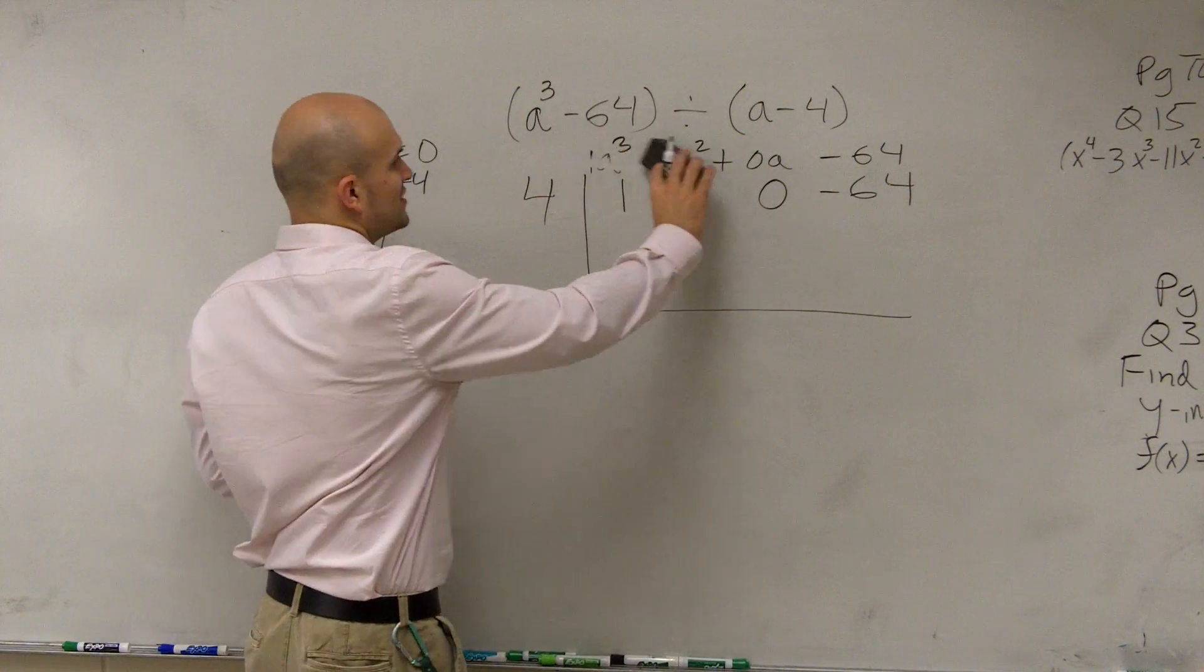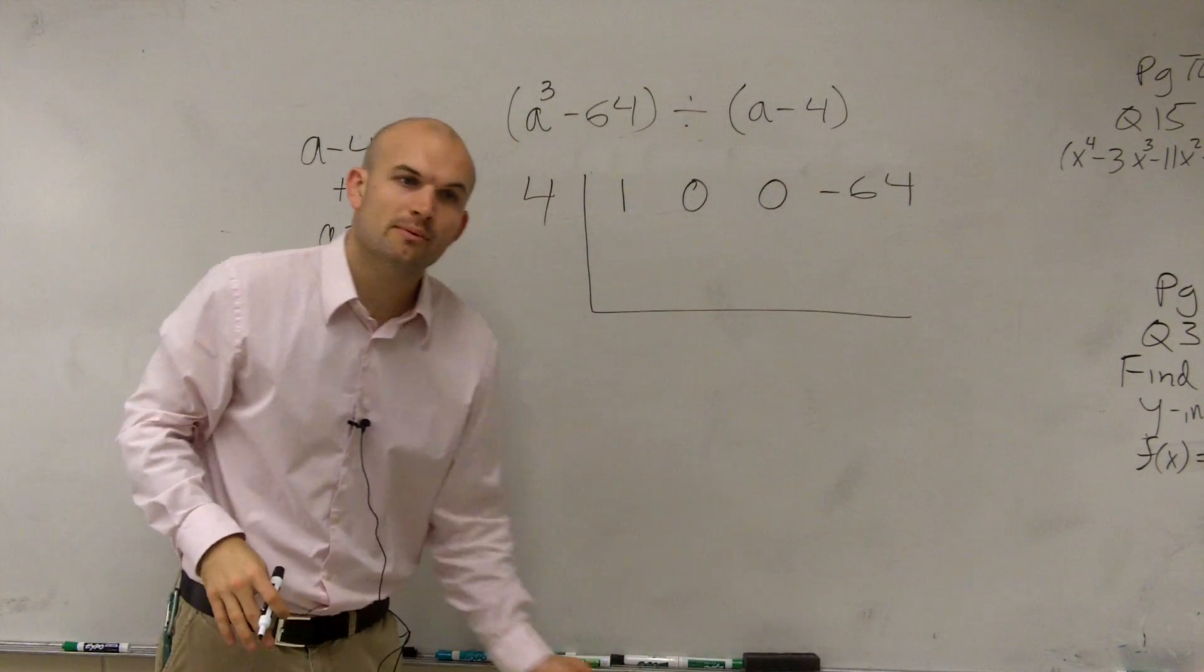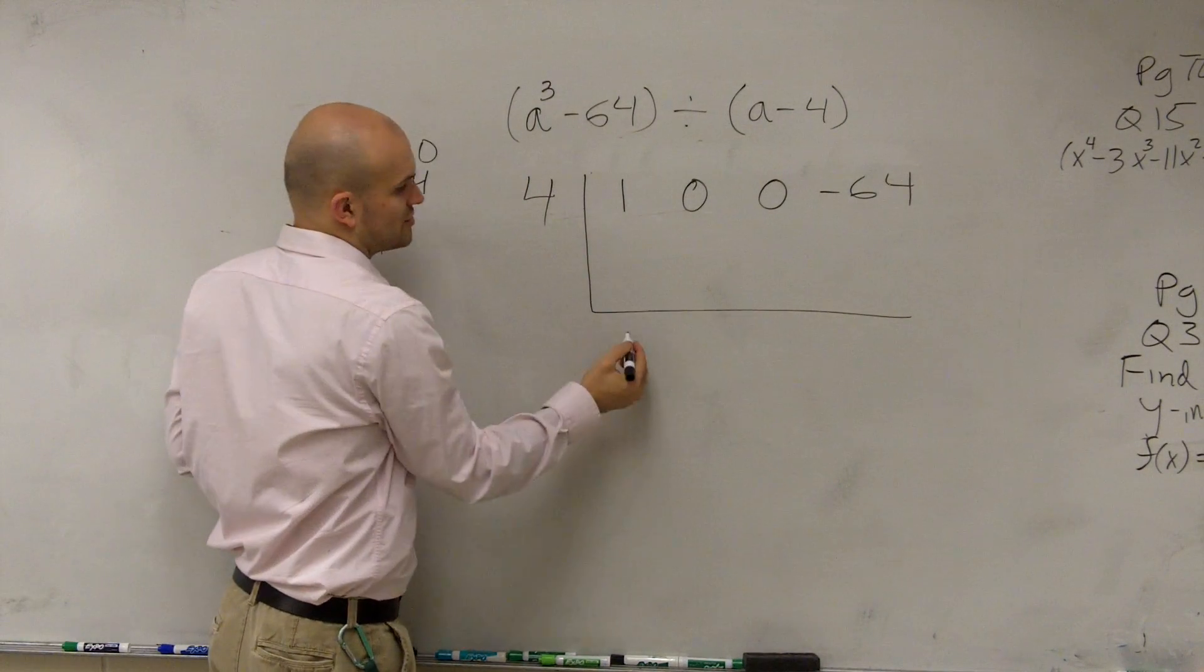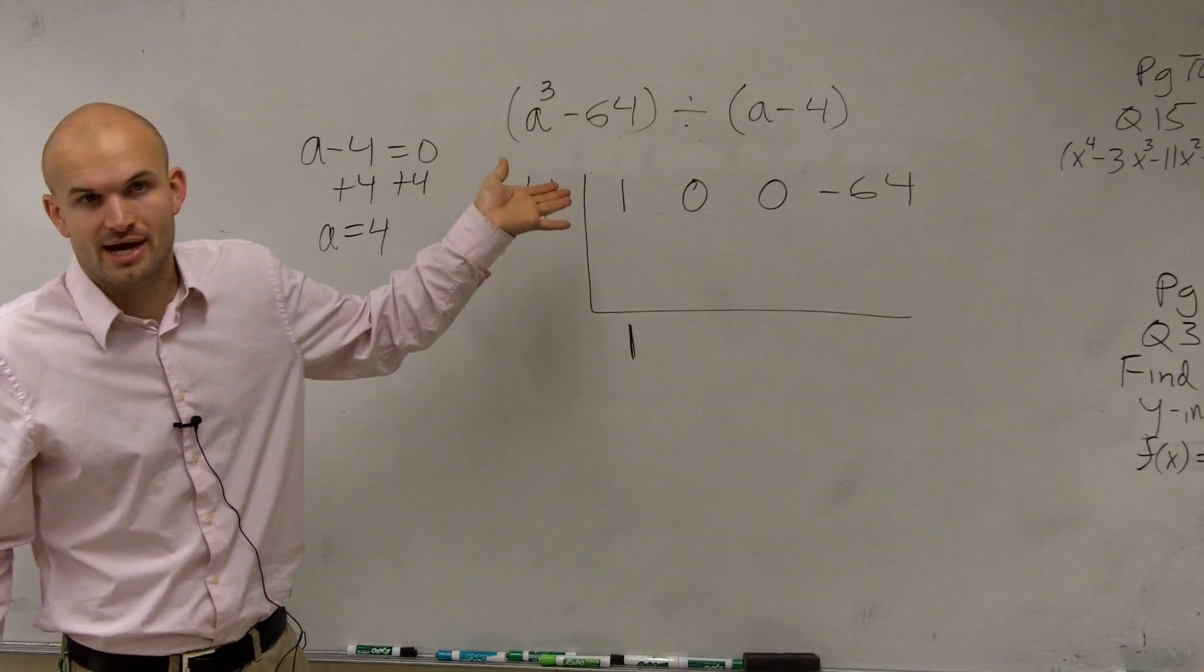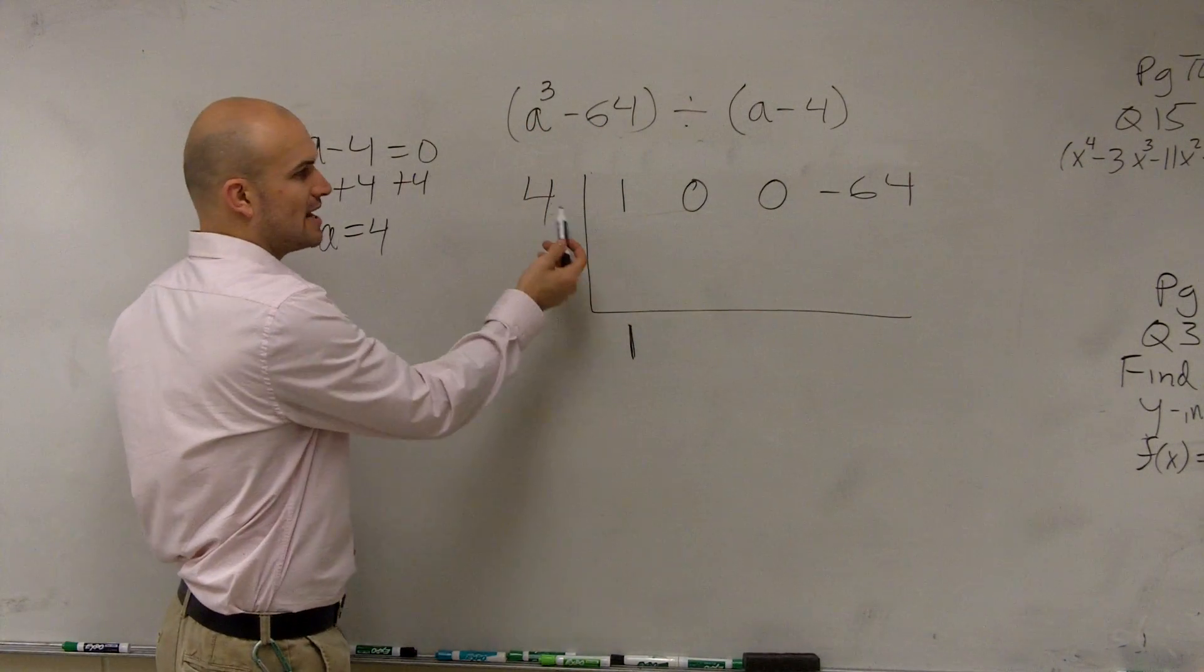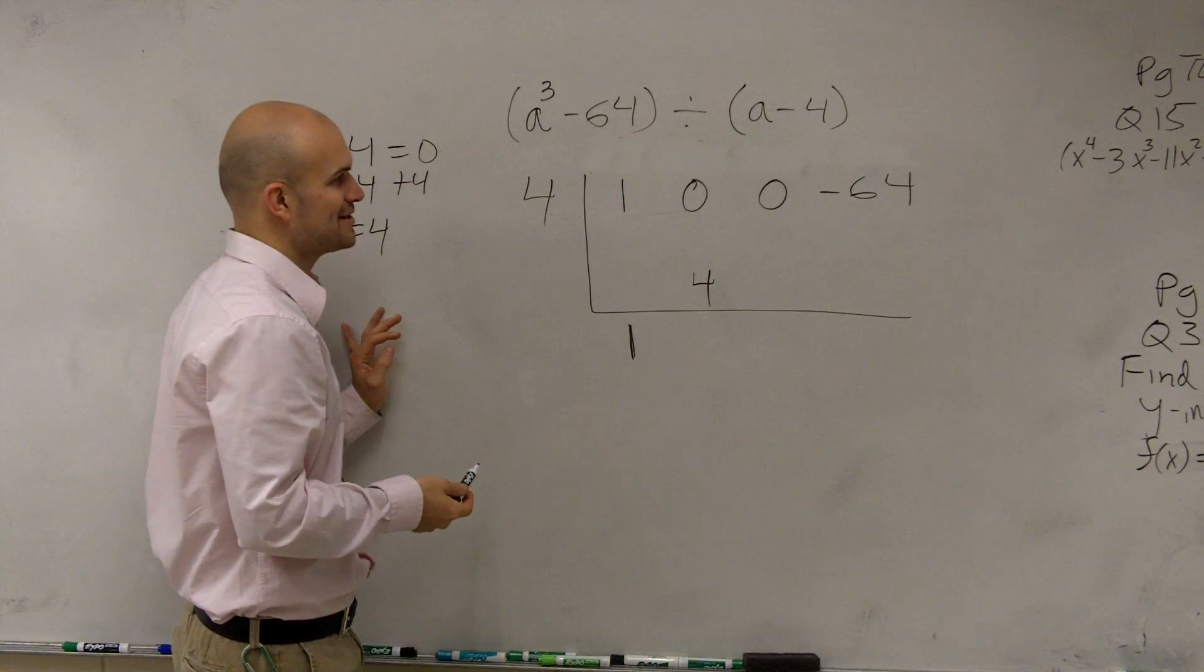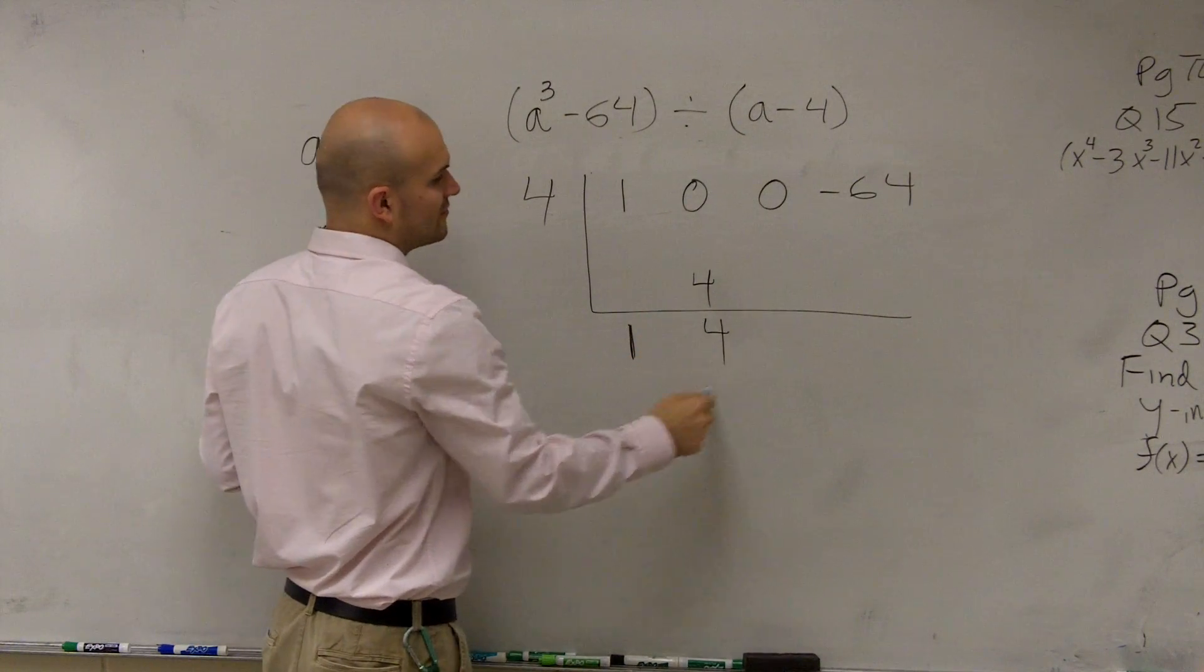So then when applying synthetic division, all you guys are going to simply do is remember the first one is kind of like a freebie. So the first one you bring all the way down, which is 1. Then diagonally we multiply, vertically we add. So 1 times 4 is 4. Vertically, 0 plus 4 is 4.